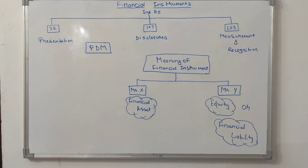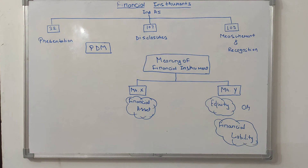In layman's language, the meaning of a financial instrument: there are two parties, Mr. X and Mr. Y. A financial instrument is like a contractual agreement between them, for which one party shall have a financial asset, and for the other party it will be either a financial liability or equity.